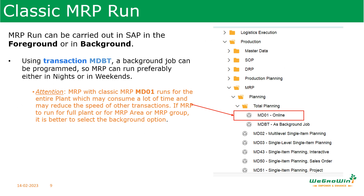Now let us talk about the classic MRP run. MRP can be run in both background and foreground. The transaction MDBT will run MRP in the background — it can be programmed so that MRP runs at a preferred time, like at night or on weekends. Please note that MD01, which runs MRP for an entire plant online, will consume a lot of resources, so we have to be very careful before running MRP with MD01.